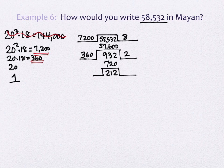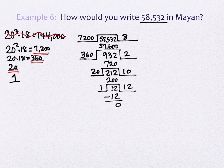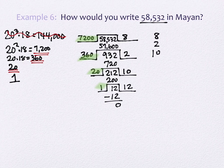What's the next thing we divide by? 20. How many 20s are there in 212? Ten times 20 is 200. Subtracting gives us 12. Then we divide by 1 — 12 divided by 1 is 12, and that subtracts the 12 to give us 0. So we've divided by each of the place values in the Mayan system all the way down to 1. The answer over here is 8, 2, 10, 12.